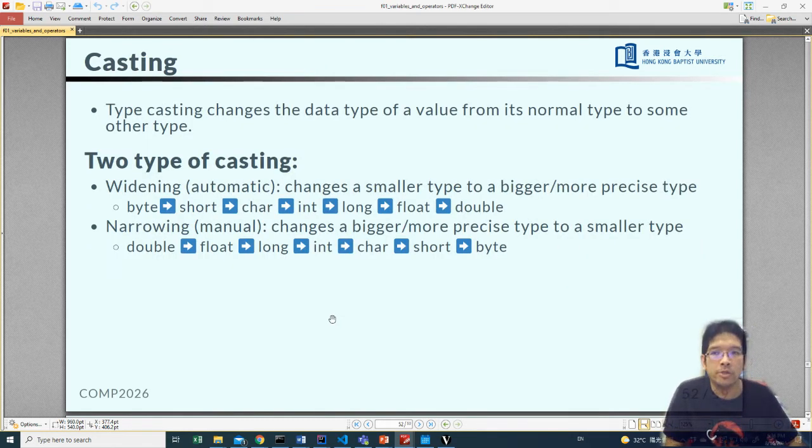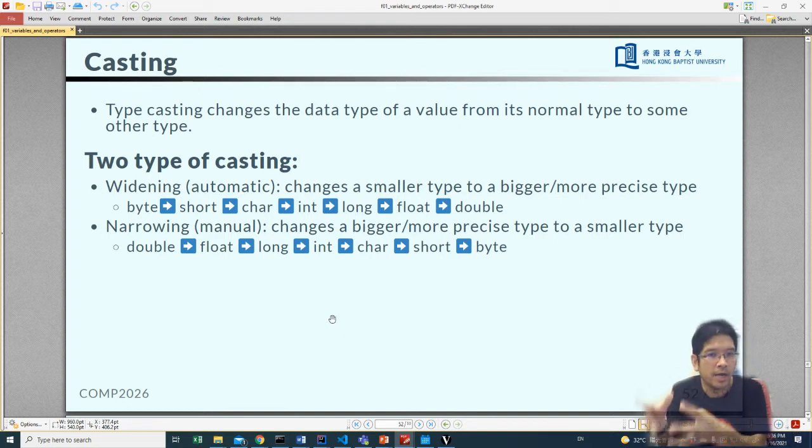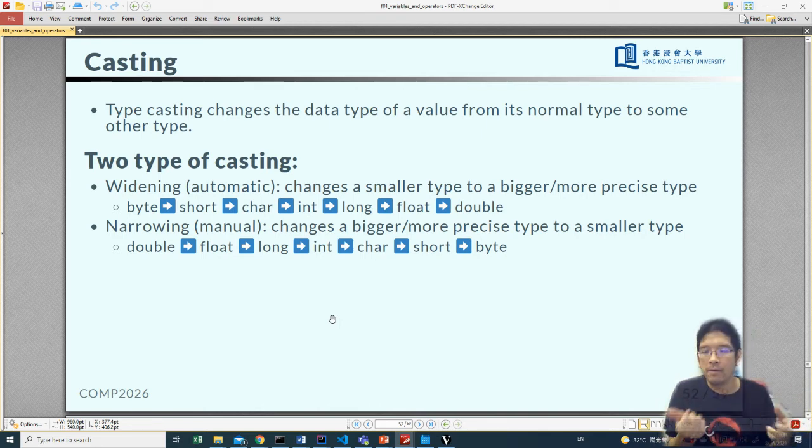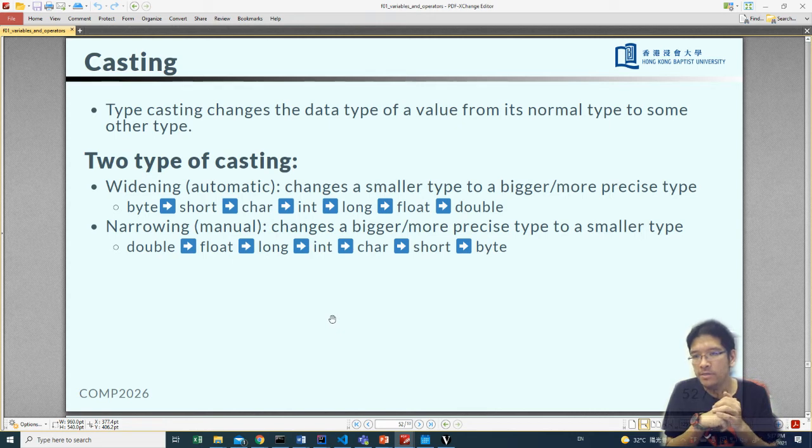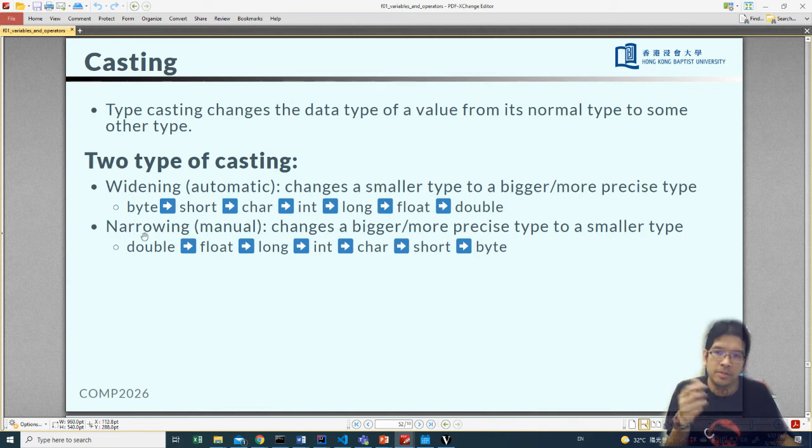Casting. Casting means that we want to change the data type from one type to another type. Because different types of values are stored in computer in different formats, we need to tell the computer I want to change the value. There are two types of casting here: one is called widening, one is called narrowing. Widening means we want to change from a small type to a bigger type or a more precise type. Narrowing means that we want to change the values from a bigger type to a smaller type, or a more precise type to a less precise type. So you can upgrade your number from byte to short to int to long, and then to a decimal number. Or narrowing, going from double to float to long and then finally to int.